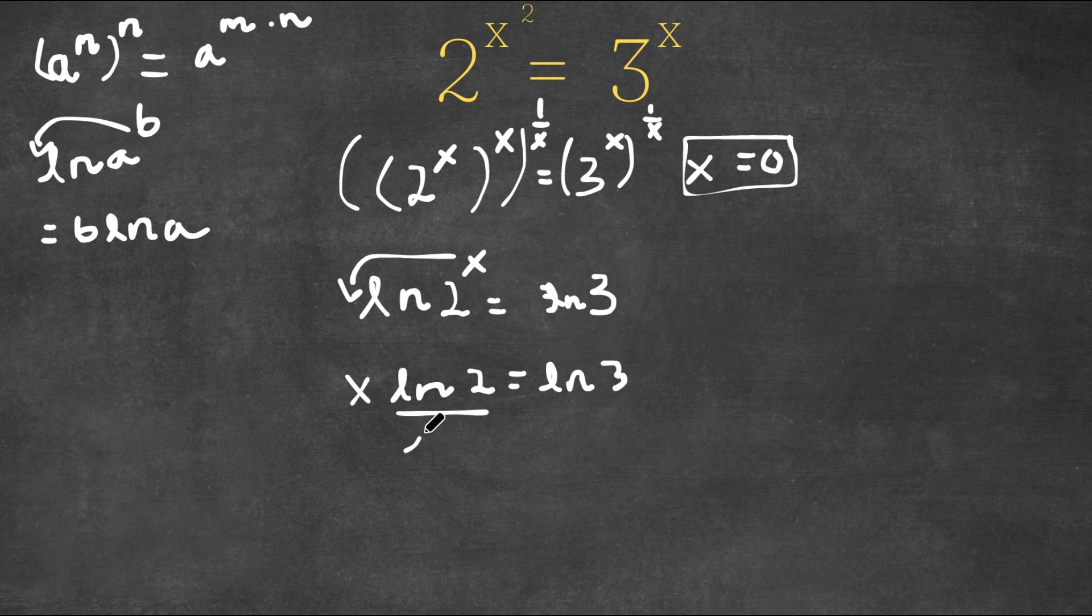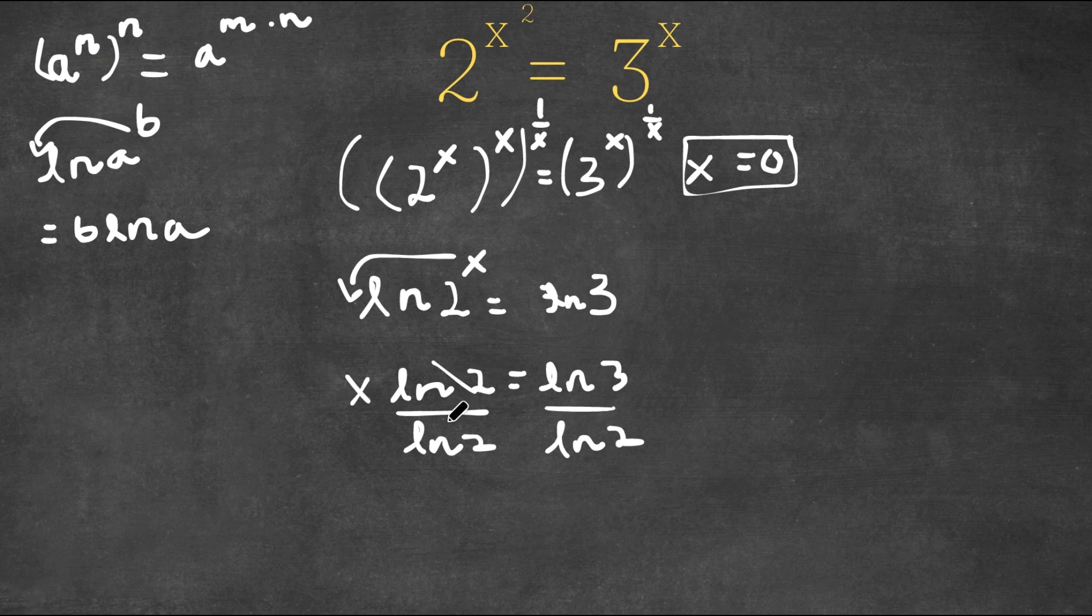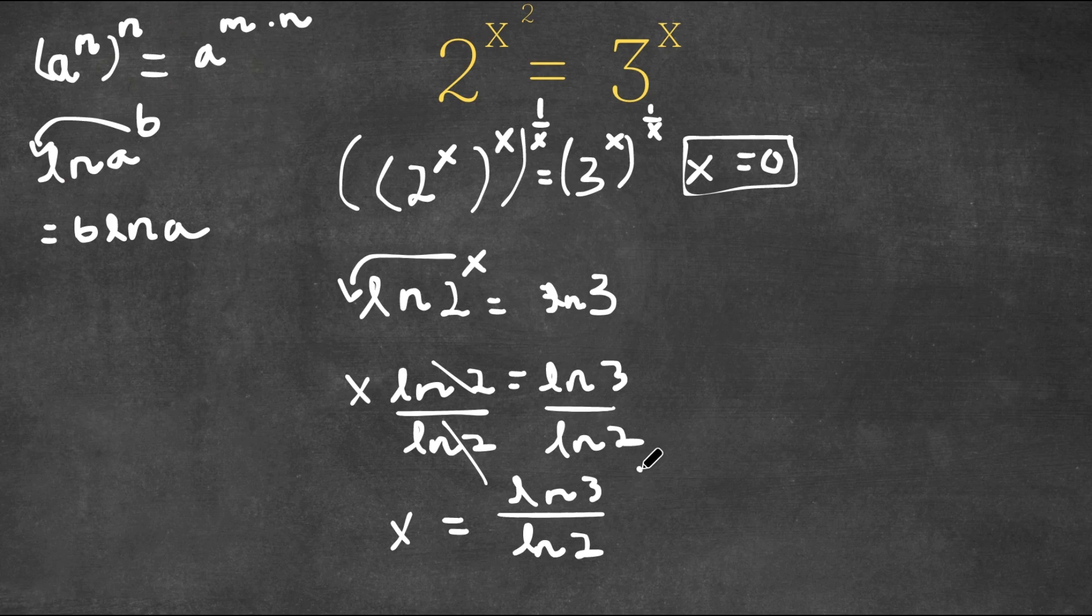Now I'm going to divide both sides by ln 2. So then these two cancel out, and I'm left with x is equal to ln 3 over ln 2. So this is our answer.